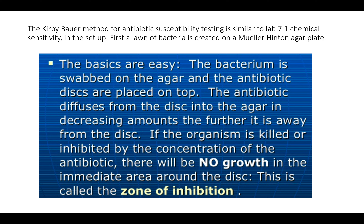First you're going to create a lawn of bacteria on a Mueller-Hinton agar plate, spreading the bacteria around with a little hockey stick and the pottery wheels that we use. After that you place little antibiotic discs on the plate — these are pre-loaded with the antibiotic, and that antibiotic diffuses into the media. Depending on the molecular structure, chemical structure, and weight of that antibiotic, it will diffuse at different rates and distances. If the organism is killed or inhibited, there will be an area of no growth around that area — we call that the zone of inhibition.